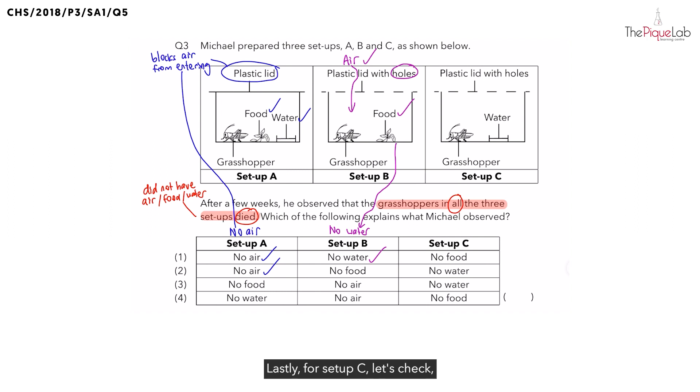Lastly, for setup C, let's check. Did it have air? Yes. Similar to setup B, the air enters through the holes. Now, does it have food? No food, but does it have water? Yes.